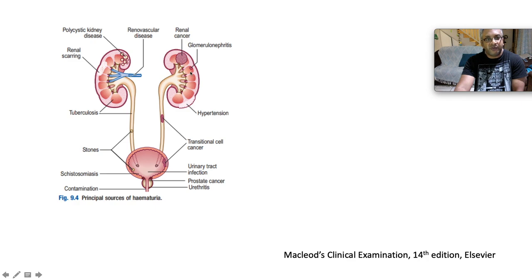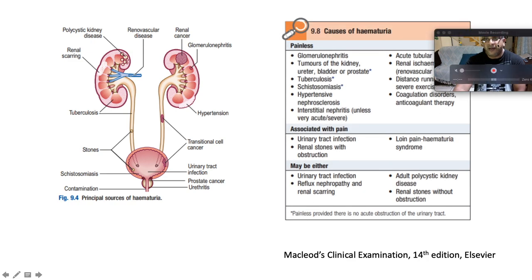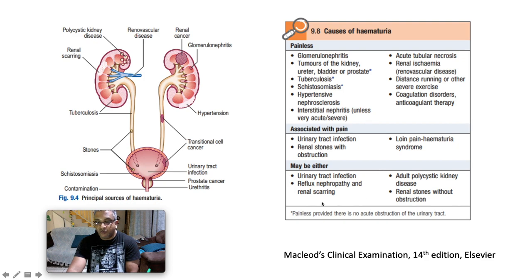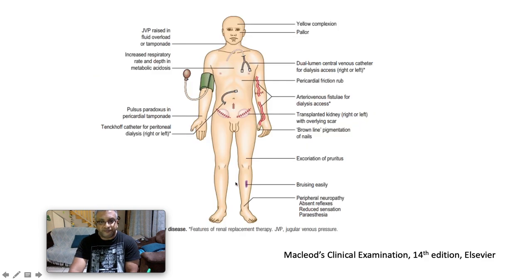Different sources of haematuria: from the kidney — renal cancer, nephritis, polycystic kidney disease, vascular disease, TB affecting the urinary tract, hypertension-induced nephrosclerosis, transitional cell cancer. Lower causes include renal stones, schistosomiasis, bladder UTI, prostate cancer, urethritis, or contamination. Haematuria can be further classified as painless or painful. Common causes of painless haematuria include renal arthritis, TB, schistosomiasis, hypertensive nephrosclerosis, acute tubular necrosis, renal ischaemia, and coagulation disorders. Haematuria associated with pain suggests urinary tract infection or the colicky pain of renal stones with obstruction.